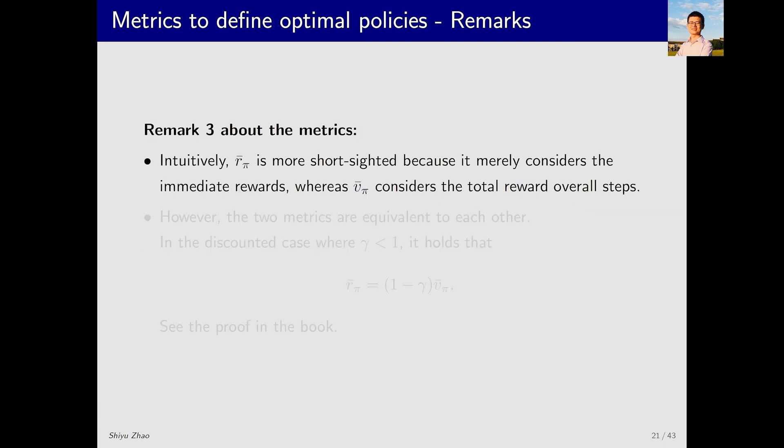The third remark is about the relationship between r̄_π and v̄_π. What's the relationship between them? Intuitively, r̄_π seems more short-sighted compared to v̄_π. Why? Because r̄_π seems to focus solely on the immediate rewards, while v̄_π is about the return. That is, the total accumulated rewards over many steps. But is that really the case? In fact, it may be surprising that these two metrics are equivalent to each other.